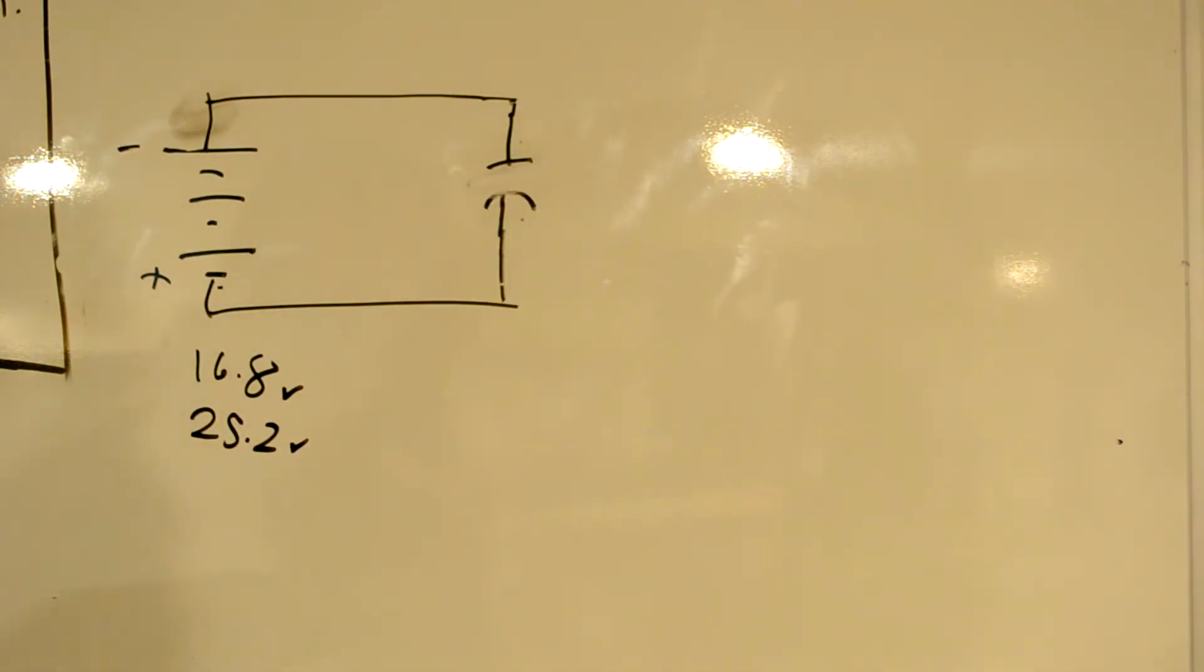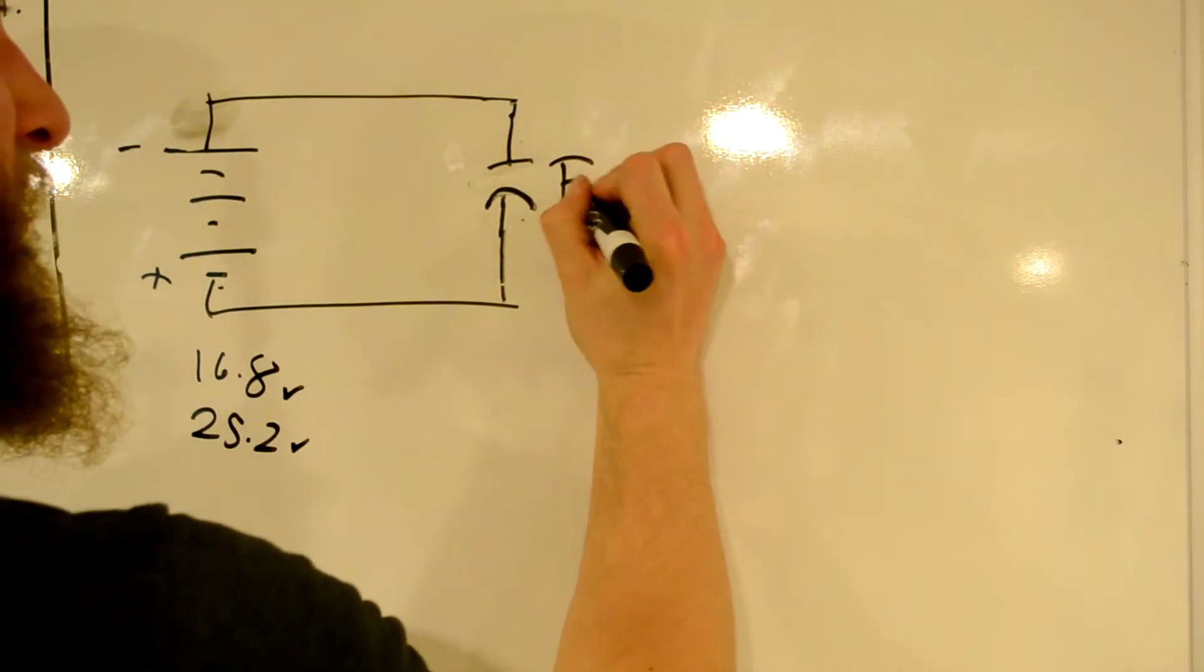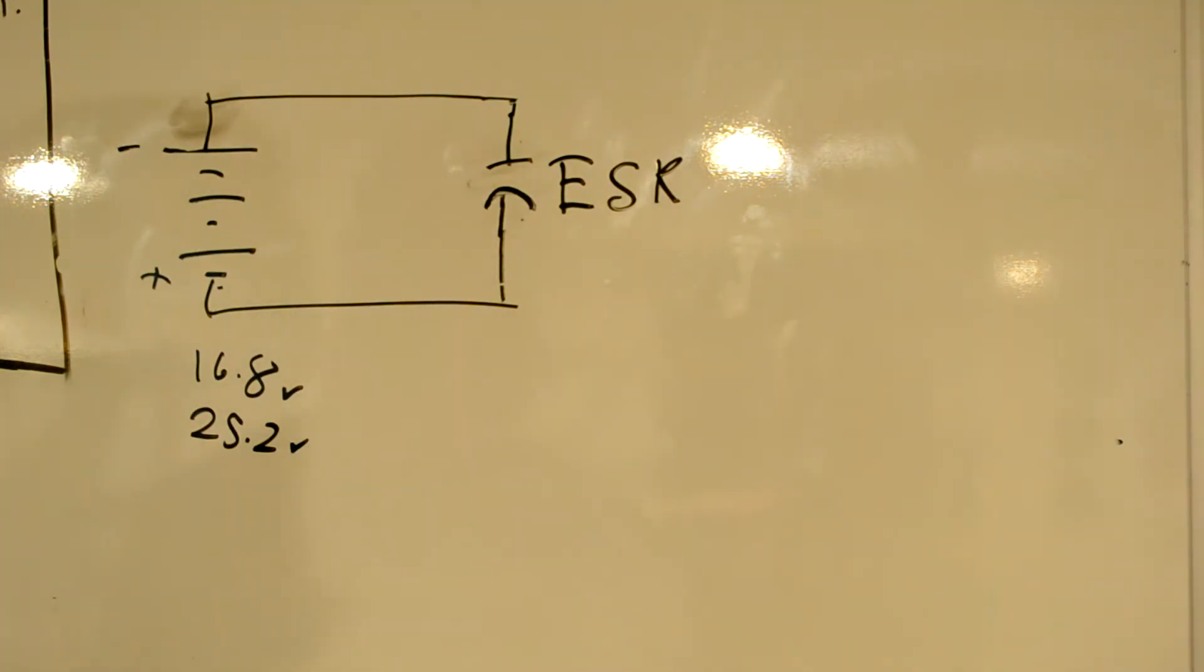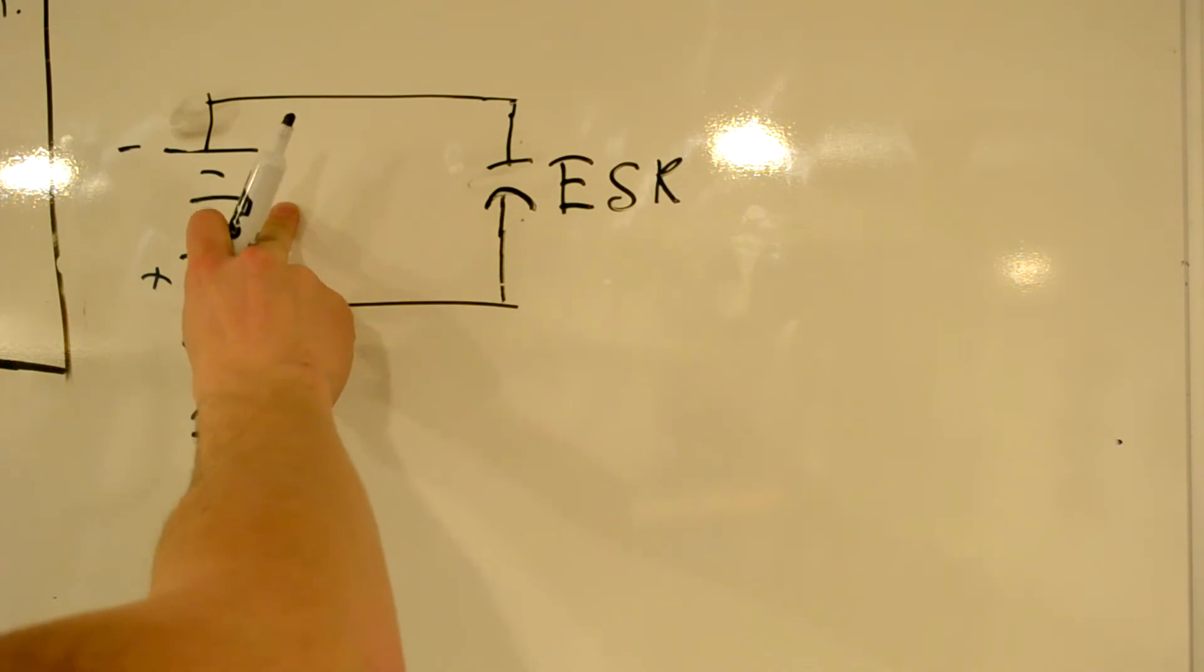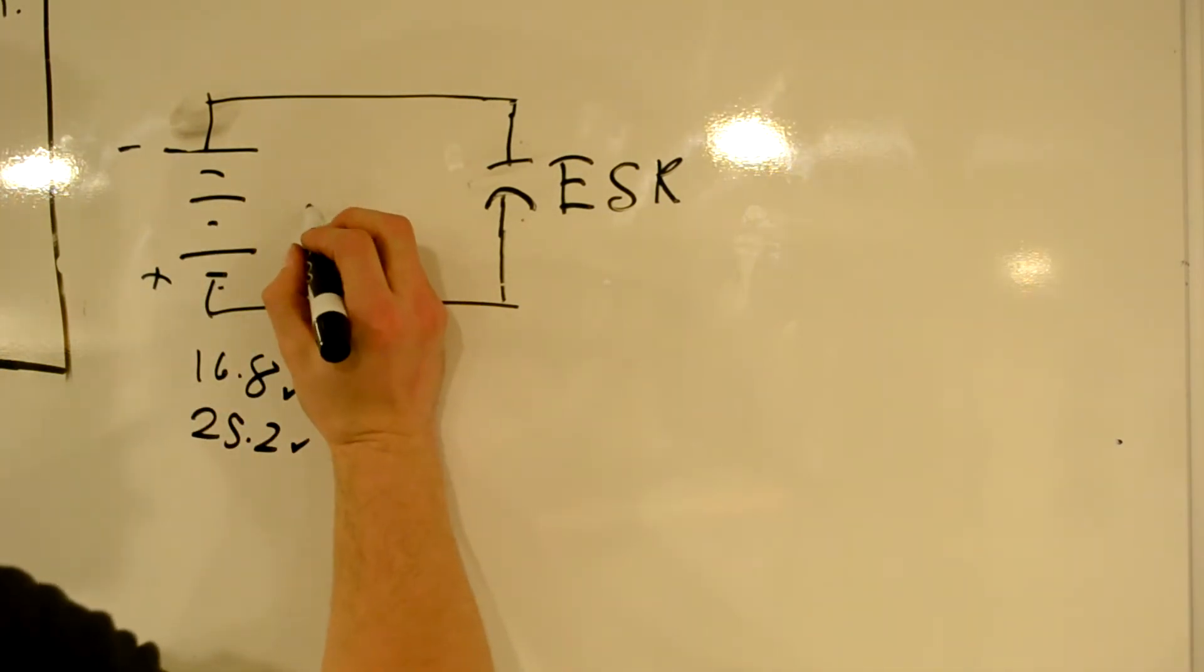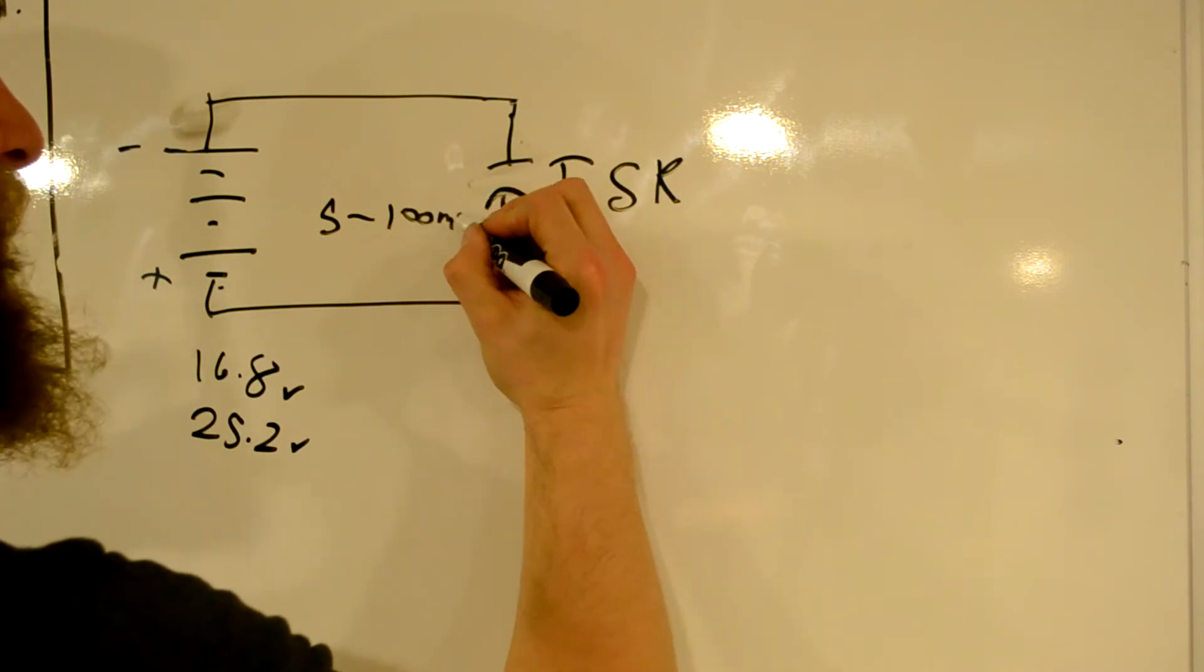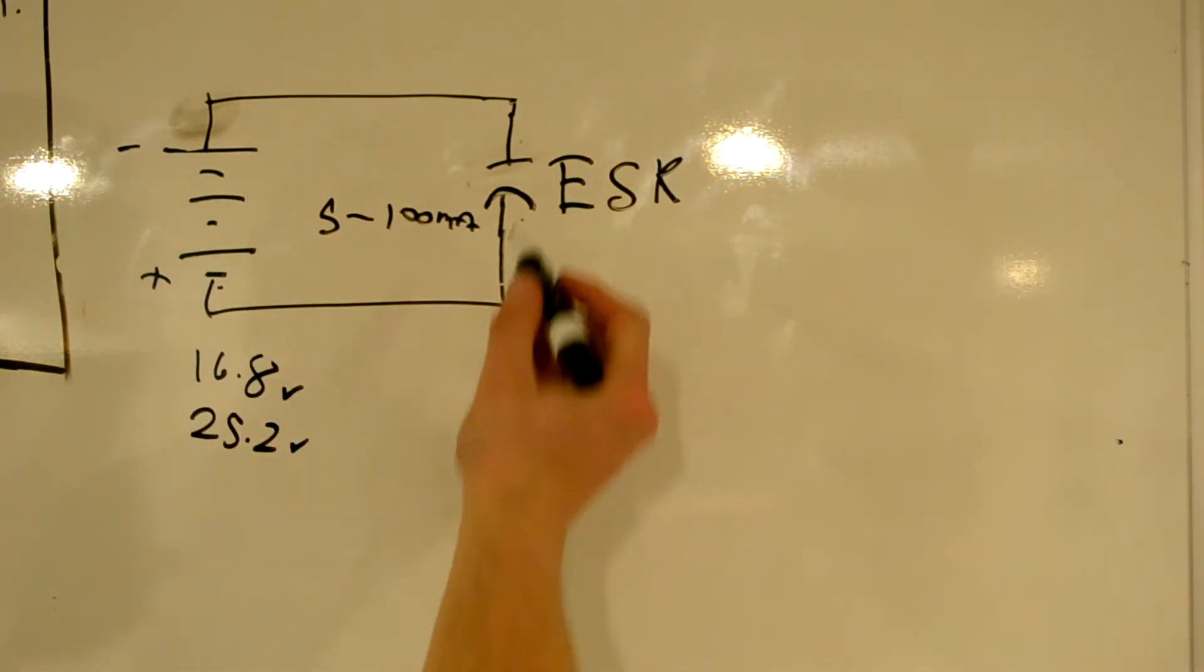Now why do I say almost? Because all capacitors do have what's called an equivalent series resistance. Now for most capacitors, that equivalent series resistance is extremely low. It's probably going to be about the same as your battery between maybe about 5 and on the high-end 100 milli-ohms. So there is going to be a resistance value, but that resistance value is going to be incredibly small. So while this would not be a complete total short circuit,